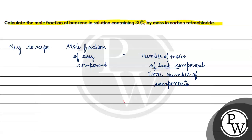Now, which mole fraction? Benzene. The mole fraction of benzene will be equal to the number of moles of benzene divided by the number of moles of benzene plus the number of moles of carbon tetrachloride.